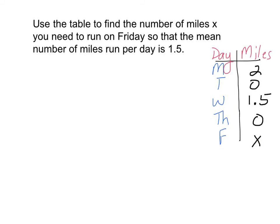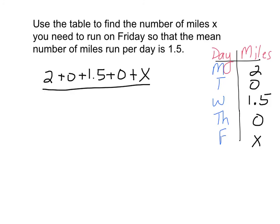Add all the numbers from the table: 2, 0, 1.5, 0, and x. Our equation is 2 plus 0 plus 1.5 plus 0 plus x, all divided by 5, equals 1.5. There are 5 numbers, so we divide by 5. The mean must equal 1.5.